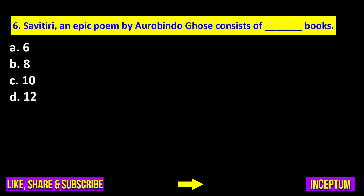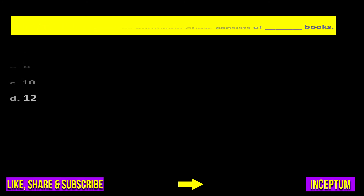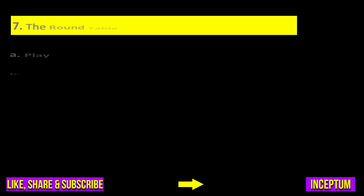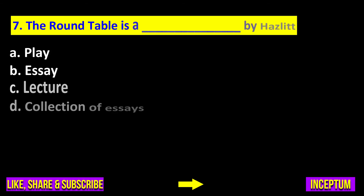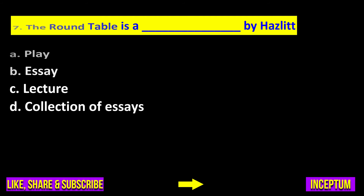Question number six: Savitri, an epic poem by Aurobindo Ghosh, consists of how many books — six, eight, ten, or twelve? The right answer is option D: 12.